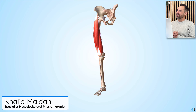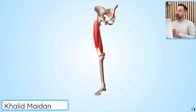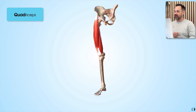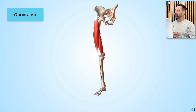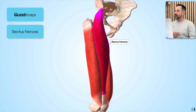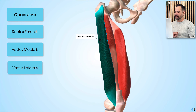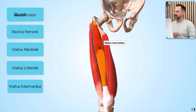Let's turn to our 3D anatomy model so we can show you the quadriceps muscles. The term quadriceps tells us that there are four individual muscles in this group that make up the collective quadriceps. Those are rectus femoris, vastus medialis, vastus lateralis, and vastus intermedius. We'll go through all of these individually to show you what they're all about.